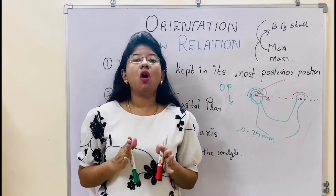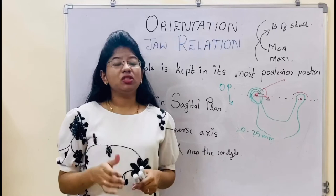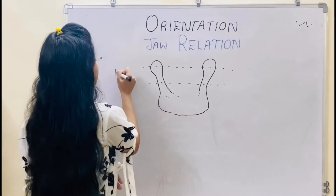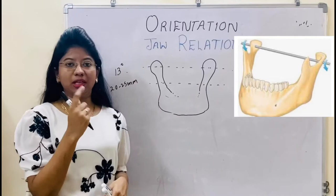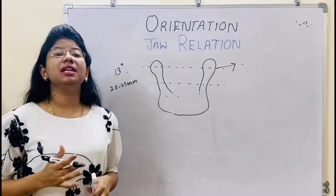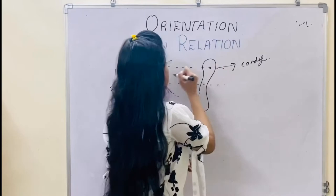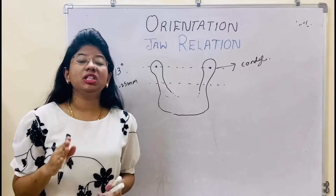Now we will see what is transverse axis, or you can say terminal hinge axis. Whenever there is rotational movement, there is 13 degree angulation and 20 to 25 mm of mouth opening. So there is movement around the axis — that is the transverse hinge axis — which is passing through or near the condyles, and there is only rotational movement. But when the mouth opens widely, there is translational motion and a shift occurs.